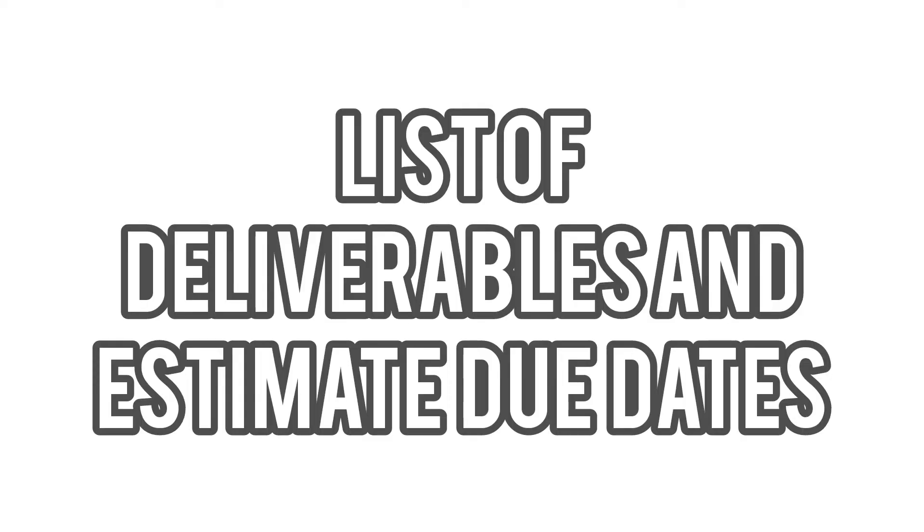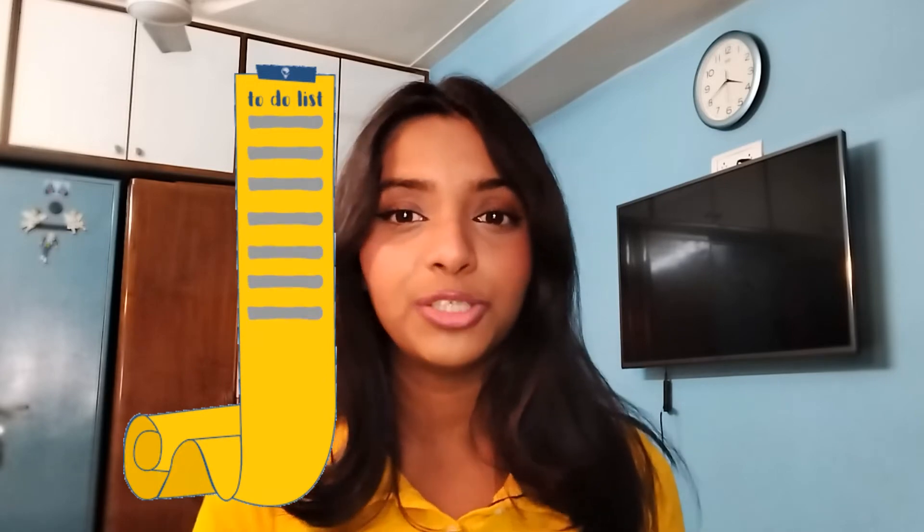4. List of Deliverables and Estimated Due Dates. From the preparation of the project scope statement, you should now have a clearer idea of the deliverables and the outcomes to be delivered to complete this project. From there, you should list out what tasks and deliverables each member is expected to produce and when.